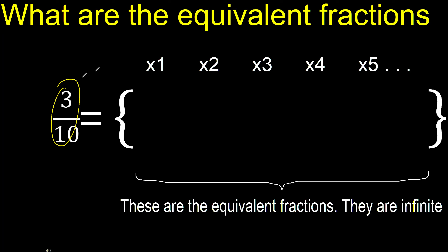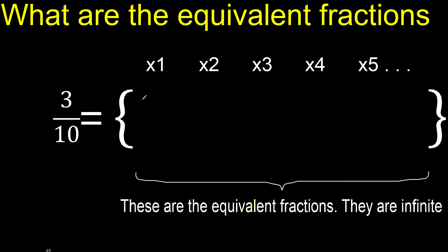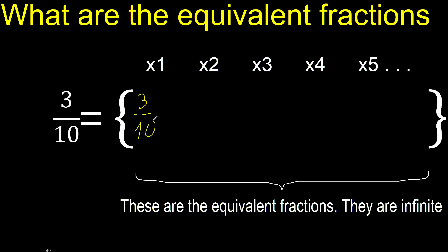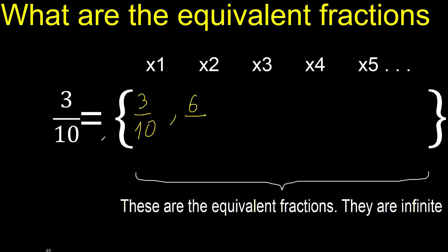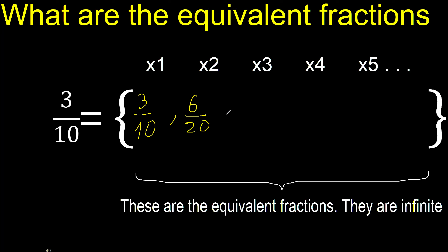First multiply by 1: 3 times 1 is 3, 10 times 1 is 10. Now multiply by 2: 3 times 2 is 6, 10 times 2 is 20.